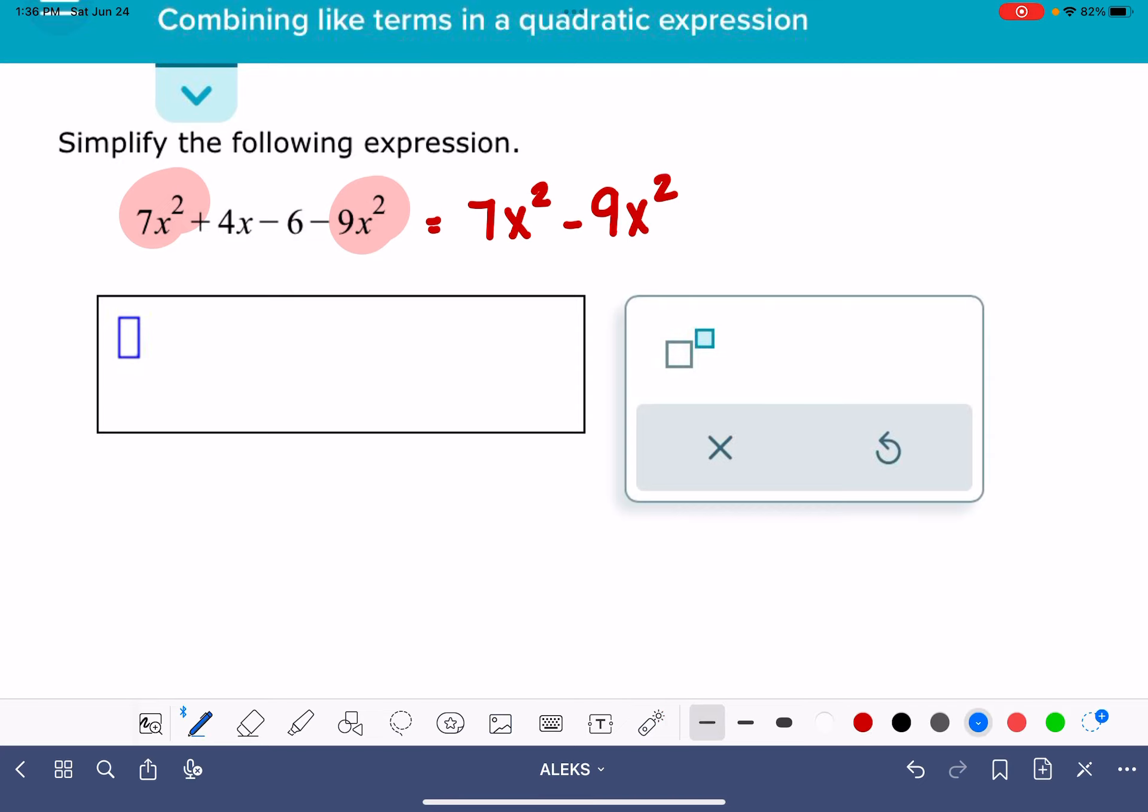Next, we have the 4x term. There's only one term that has the x variable in it all by itself. x by itself is not the same as x squared. And then last but not least, we have negative 6 that doesn't have any x variables in it at all.